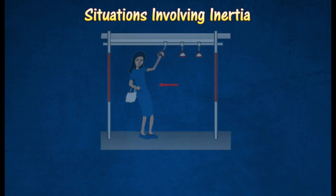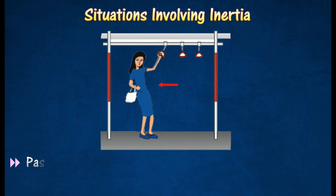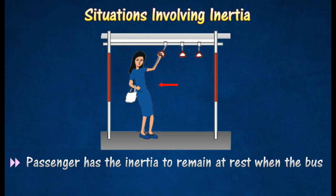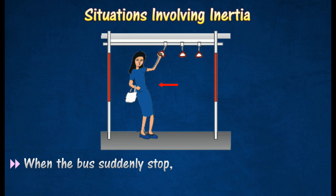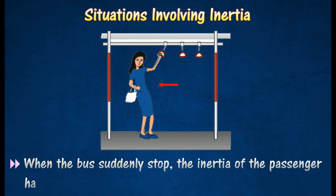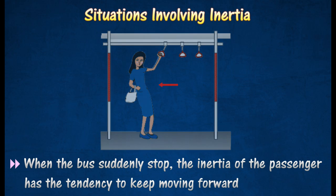A passenger standing in a bus tends to move backwards when the bus starts to move forward, because the passenger has the inertia to remain at rest. When the bus stops suddenly, the passenger is thrown forward because the inertia of the passenger has the tendency to keep moving forward.